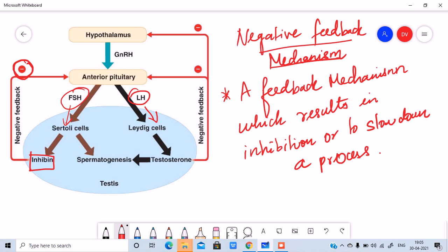What is this inhibin? When enough nutrition is taken up by the Sertoli cells and when the Sertoli cells sense that the nutrition received is enough to make enough sperms, what will it do? It will start producing a hormone called inhibin.